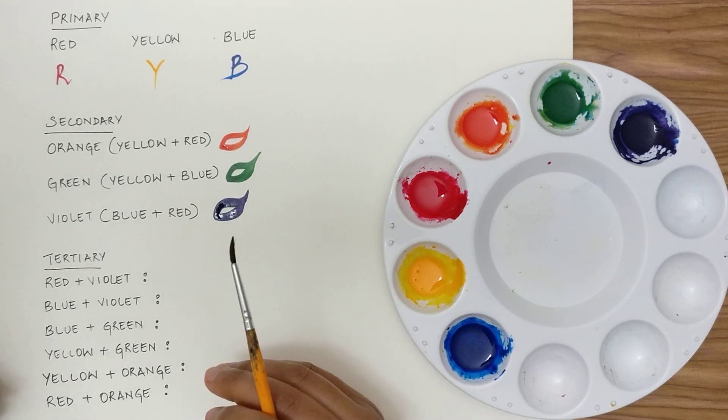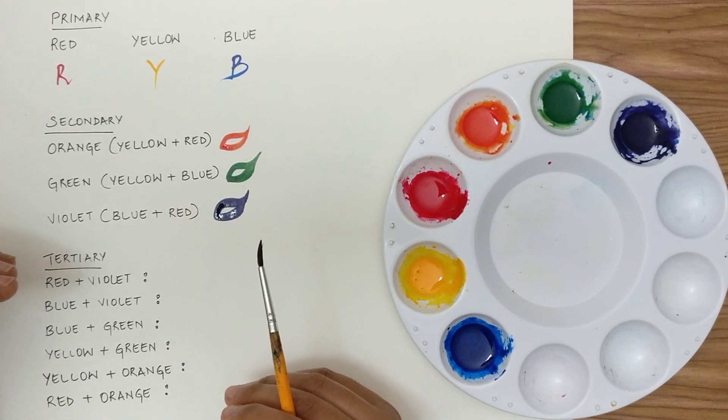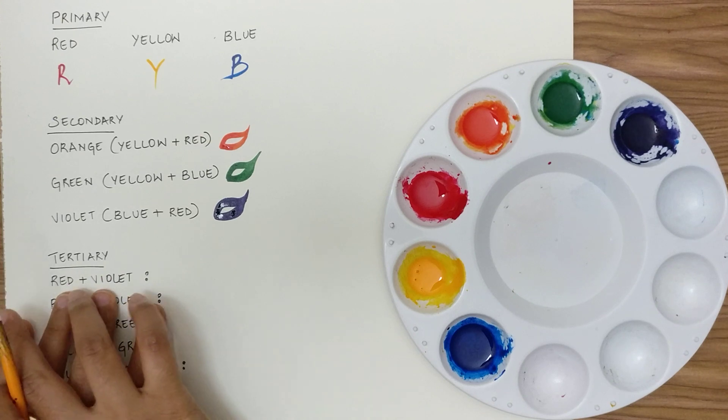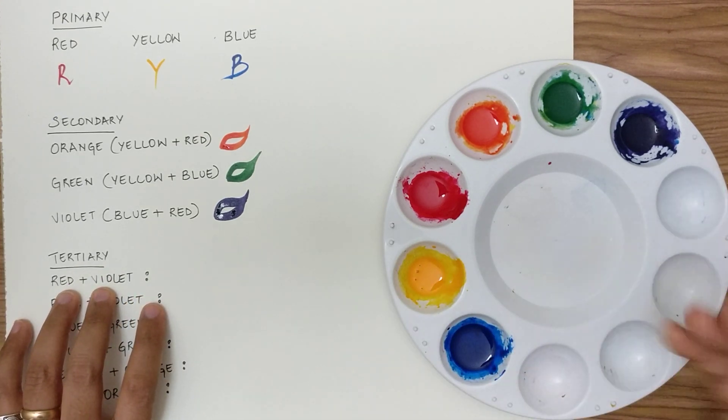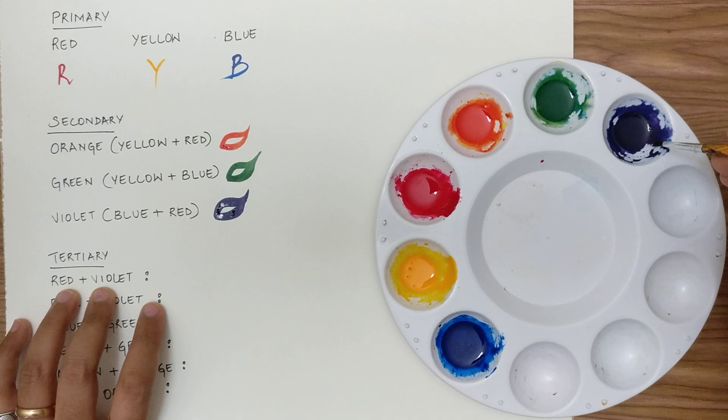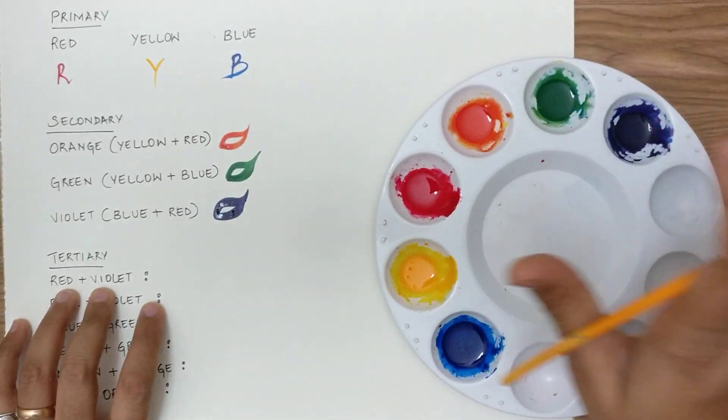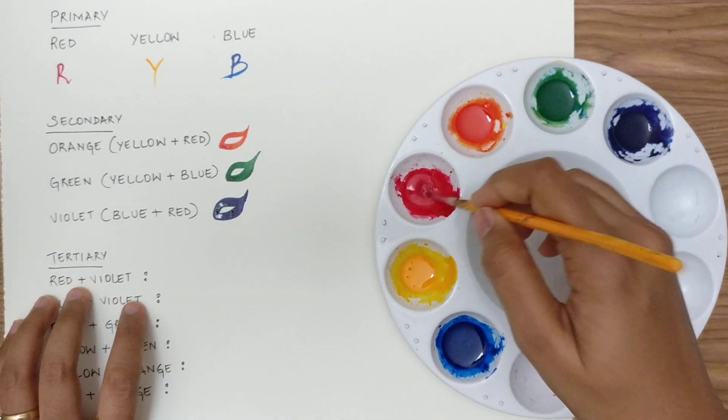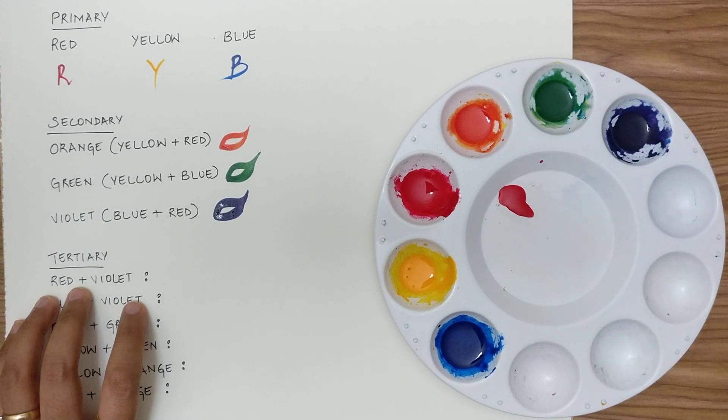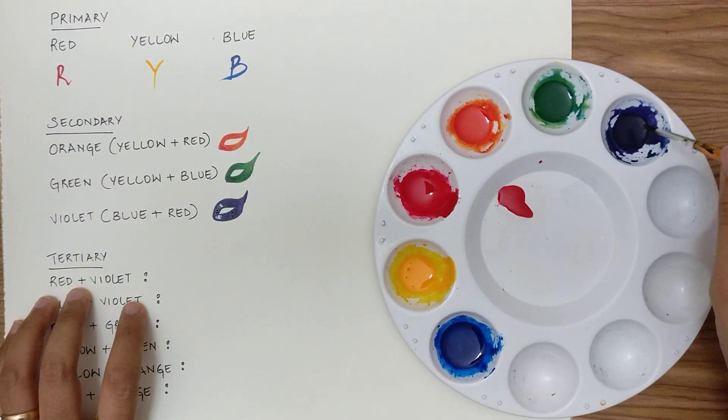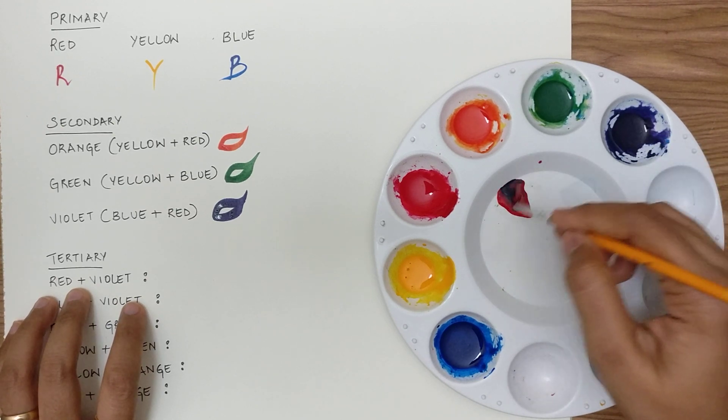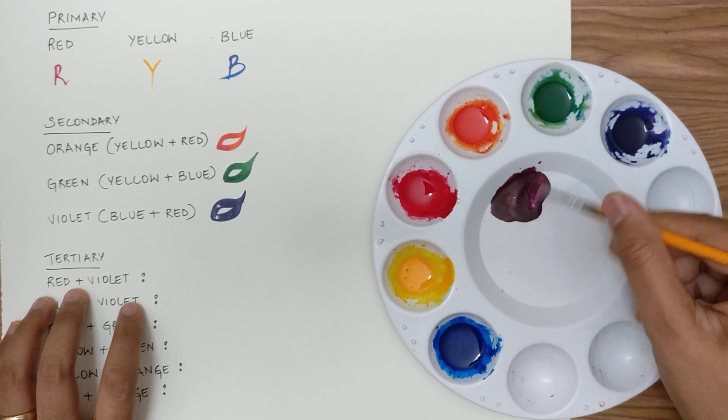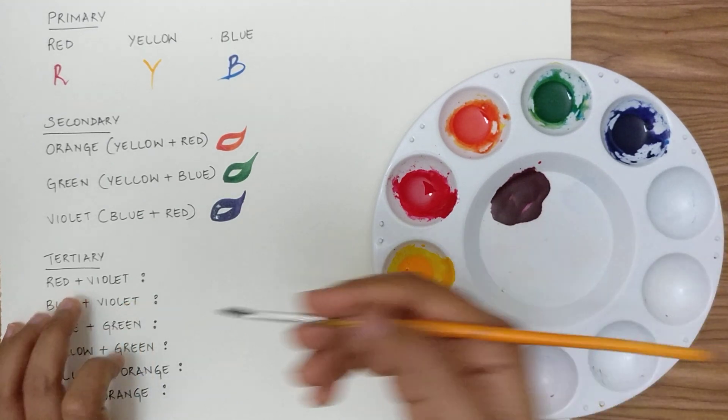Once that is done, we move on to the tertiary colors. Tertiary is basically a combination of primary and secondary colors. In this case, I've clearly mentioned if you combine red and violet, let's see the result. I have violet here. I have my primary and secondary colors already done here. Now let's work on the first combination, which is a little bit of red. I'm washing my brush in between each of them. And violet. It gives me this kind of color, more of a purplish deep mauve kind of color.